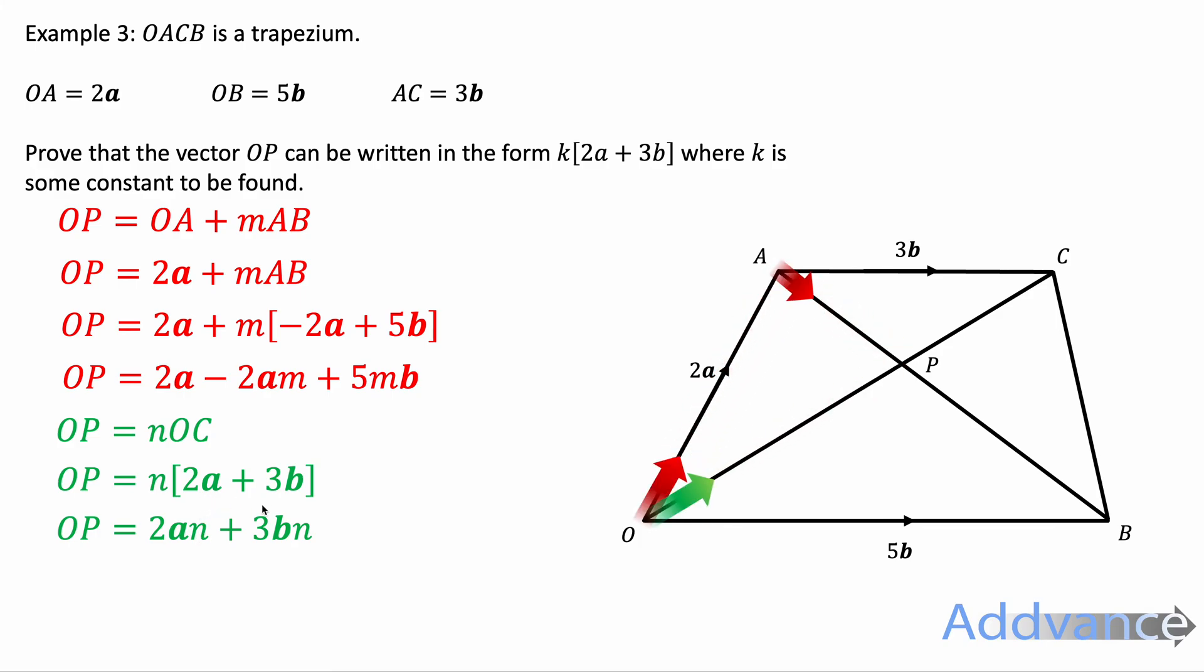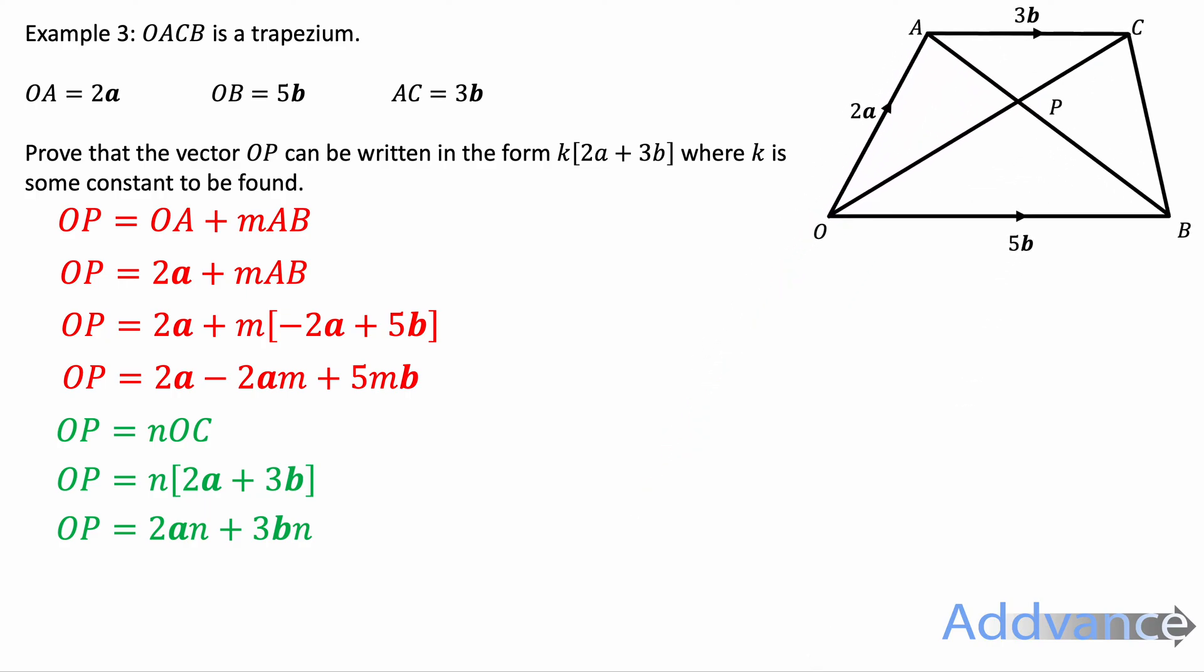We've got 2a plus 3b from going 2a plus 3b and that was a vector from O to C. We now have these two expressions for OC and OP and they must be equal to each other because they are going to the same point.